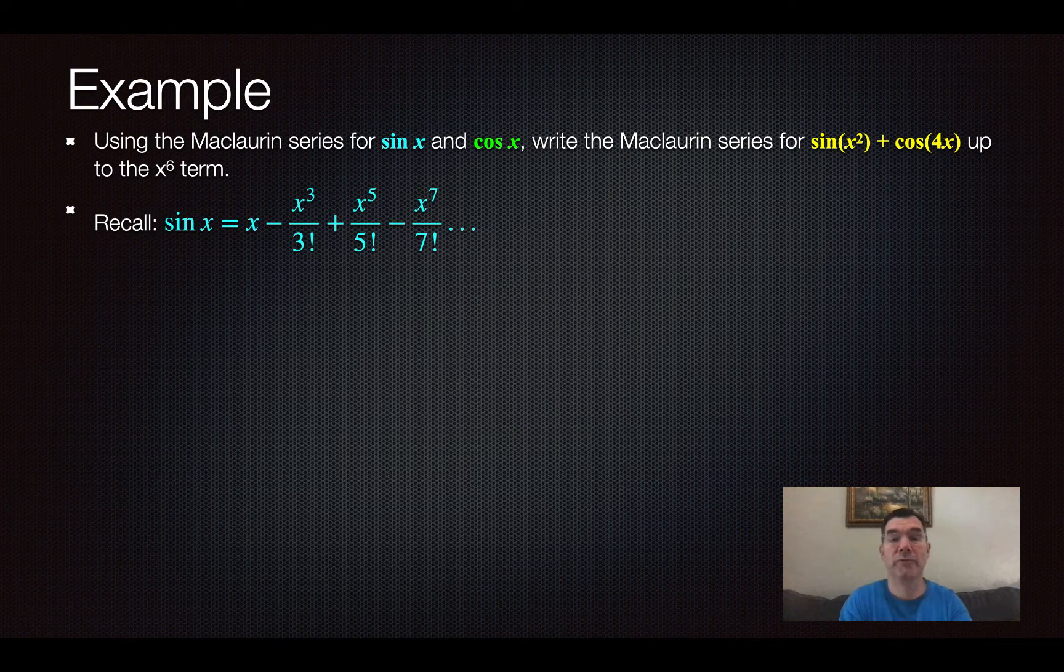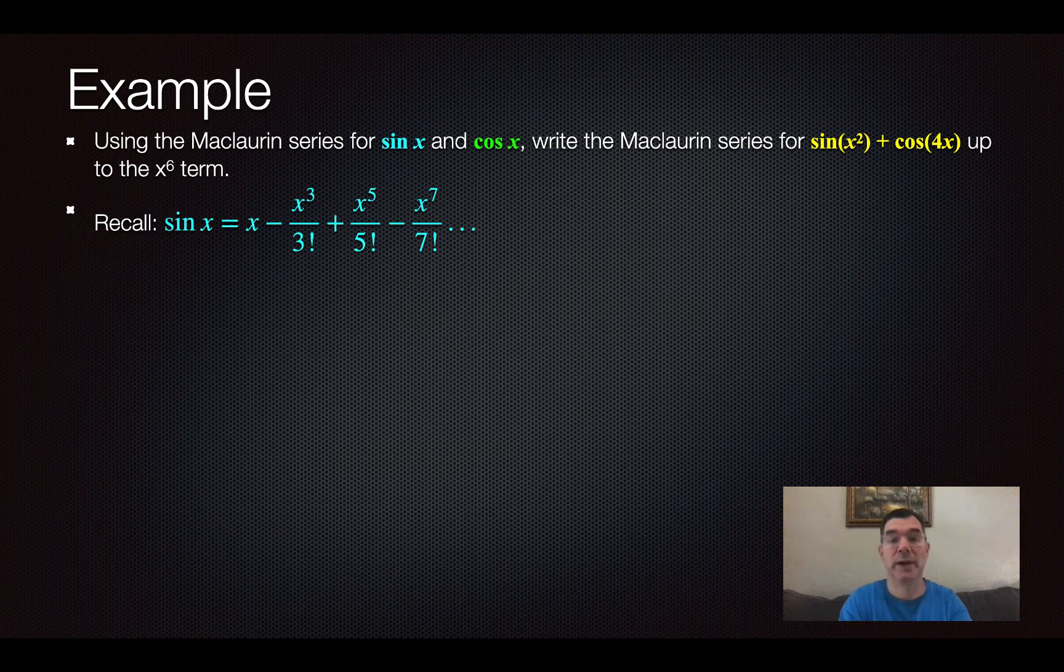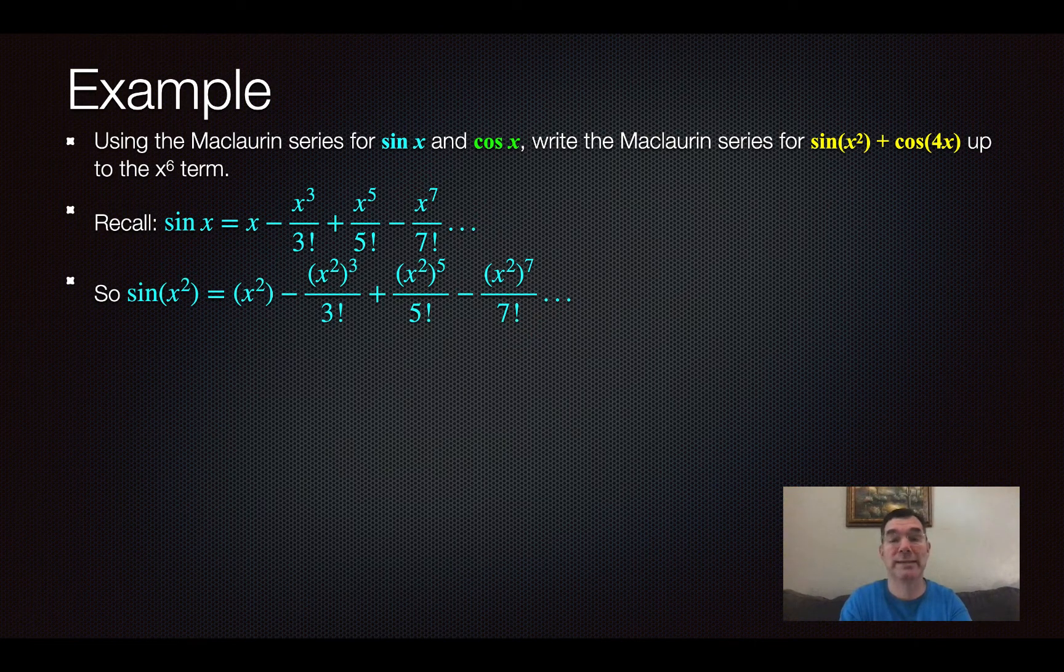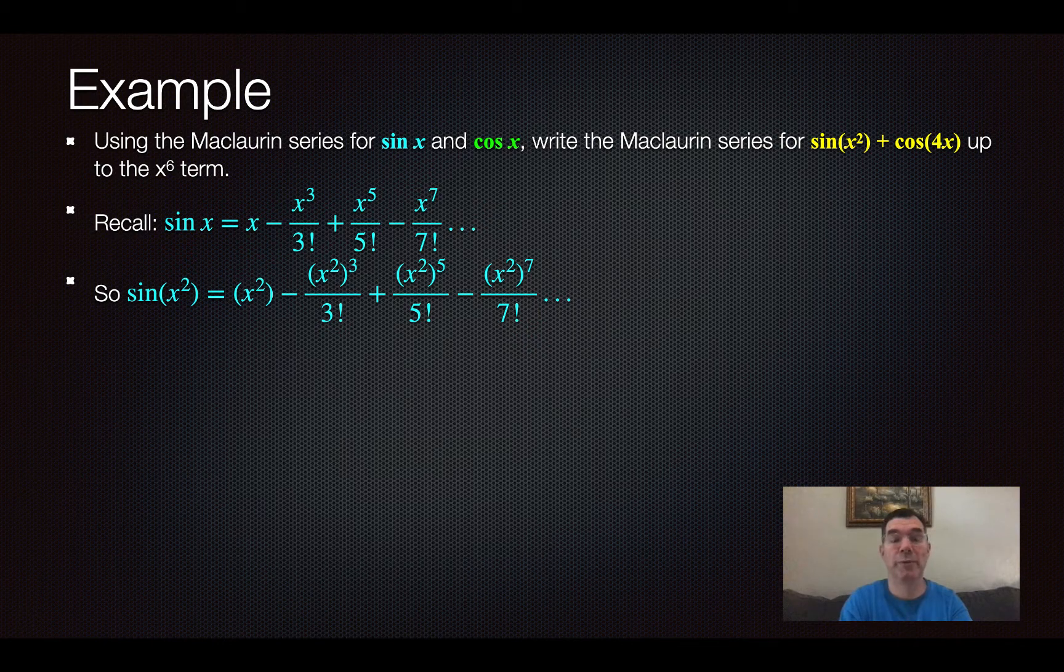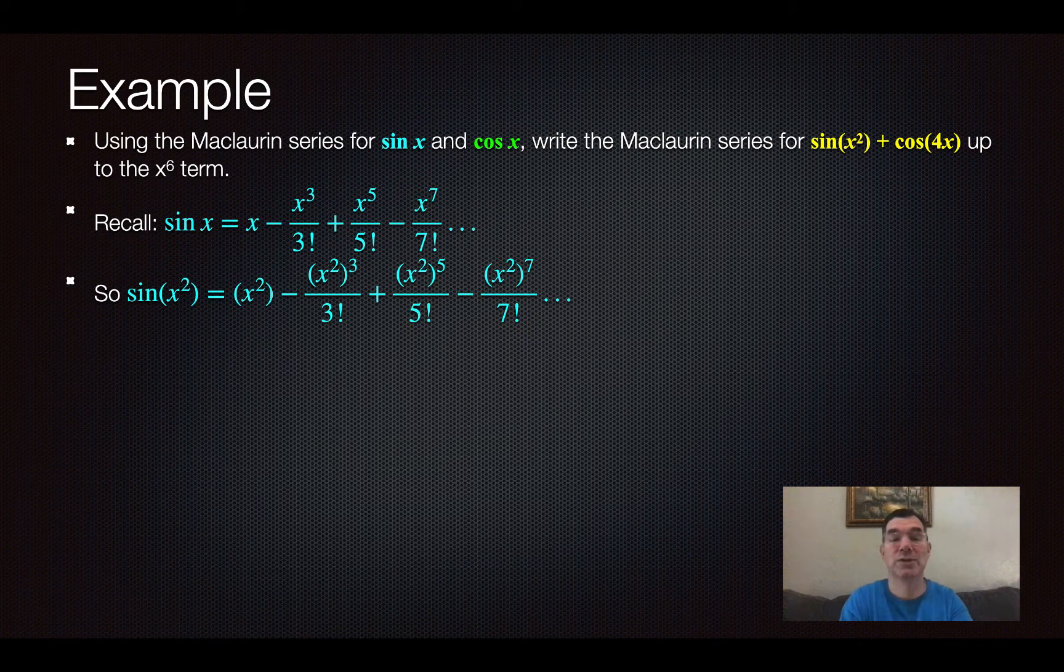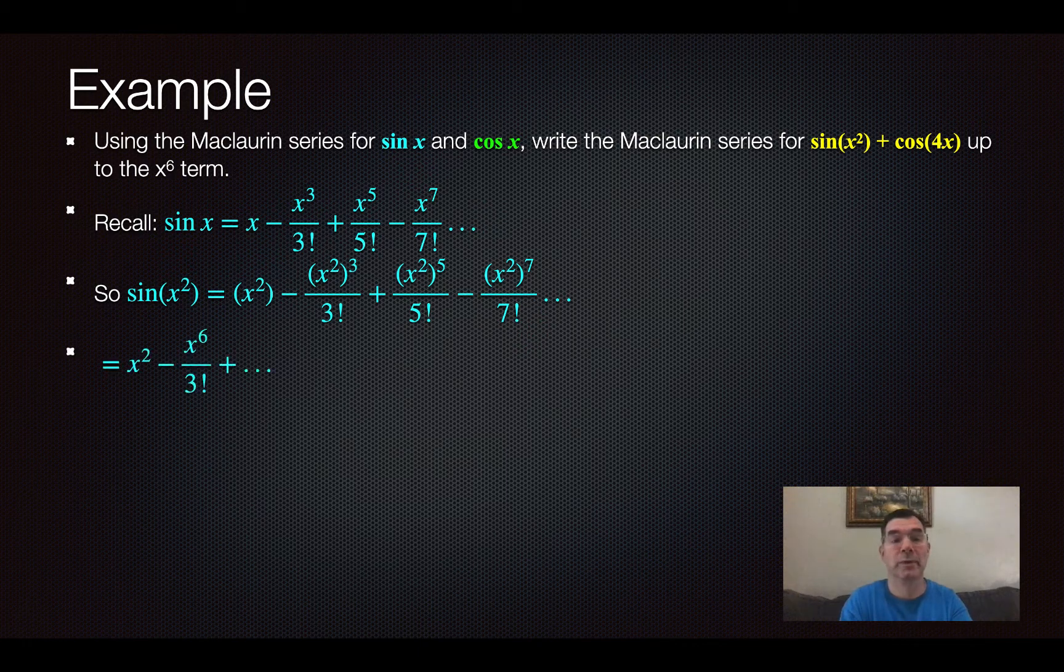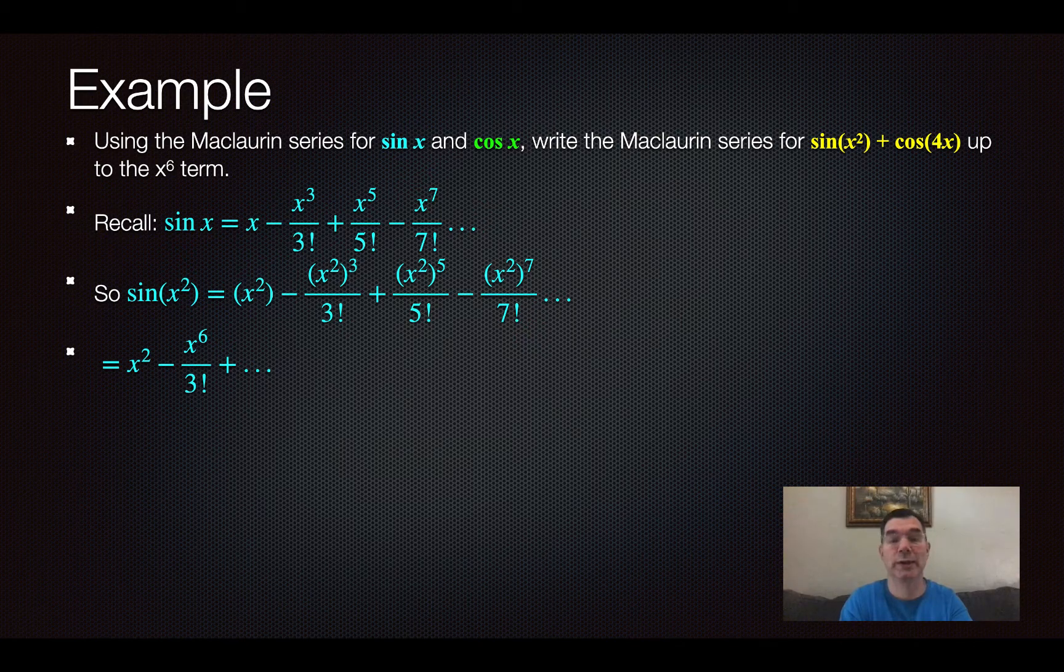So from what we know before, the function sine x is approximated by the polynomial x minus x to the third over 3 factorial and so on following that pattern. So if I wanted to write sine of x squared instead, the Maclaurin polynomial for that would be the same as for sine x, it's just that every x is now x squared. So it would be x squared minus x squared to the third over 3 factorial and so on. And so if I simplify that, I get x squared minus x to the 6 over 3 factorial and so on.